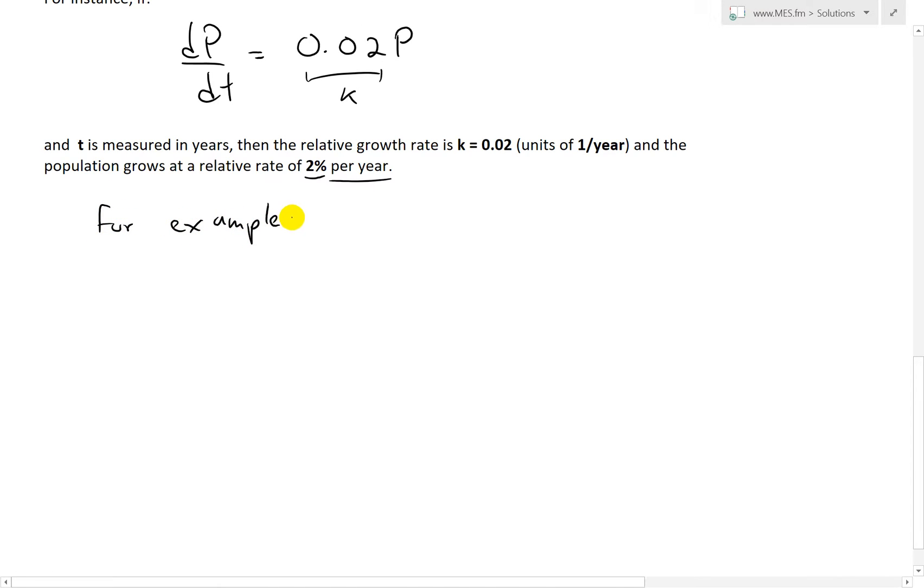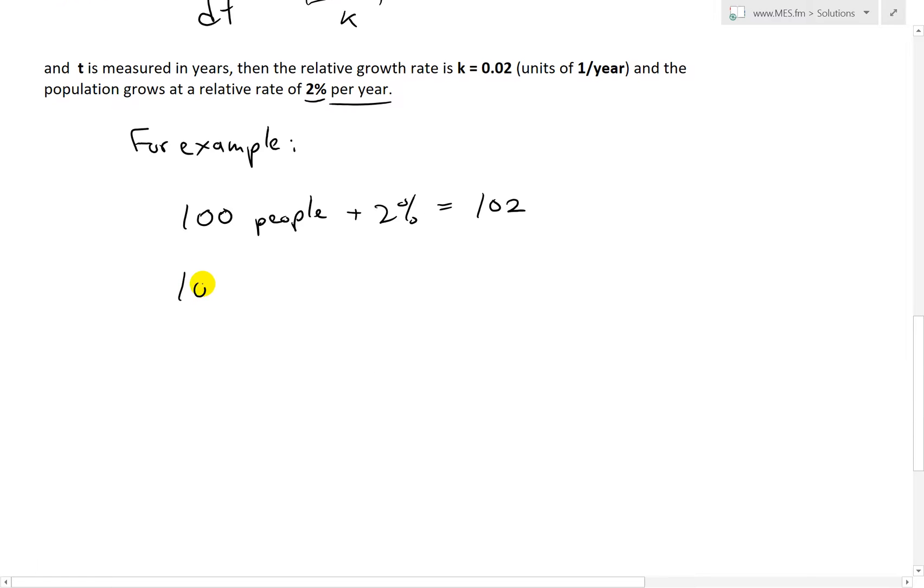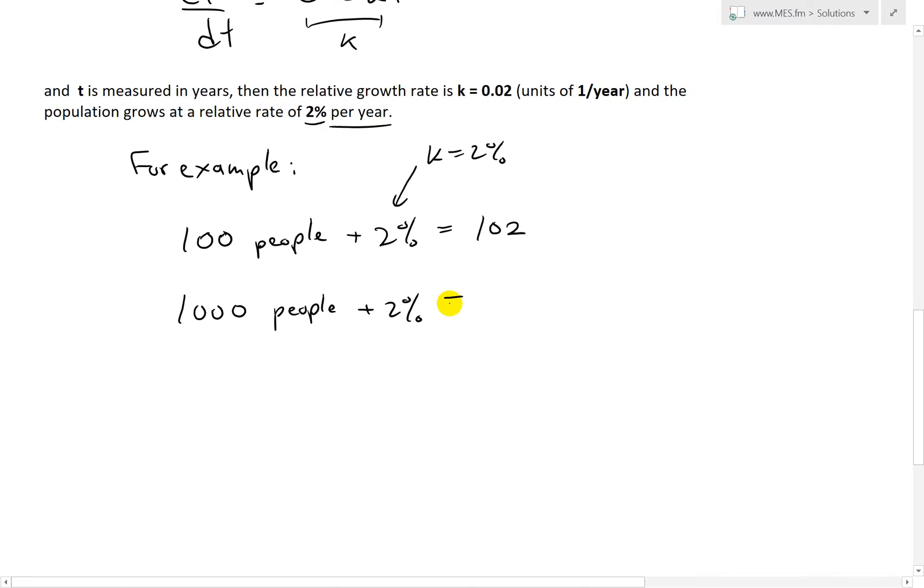For example, just to illustrate this relative growth example: if we had 100 people, that's their population size, and it increases by 2%, 2% of 100 is just 2, so this equals 102. But similarly, if you had 1,000 people plus 2%, so this is the same relative growth rate, even if we had this k as 2%, then instead of 102, this is going to be 20, which is 2% of this, which is times by 10, so 1,020.